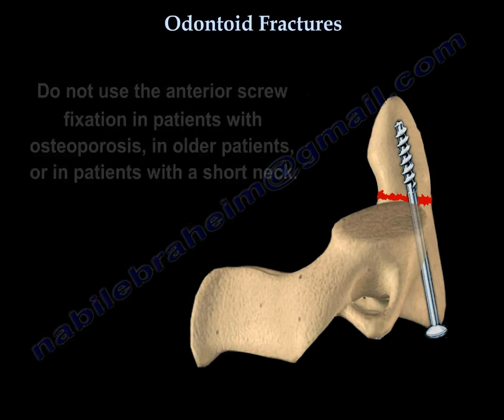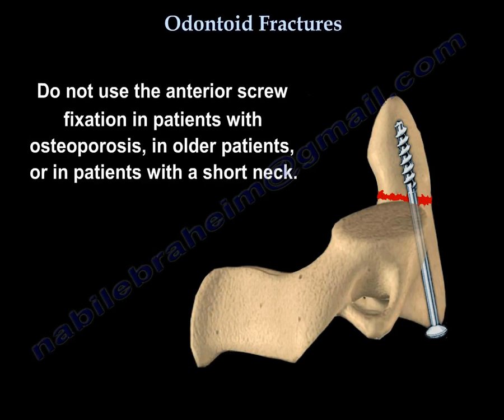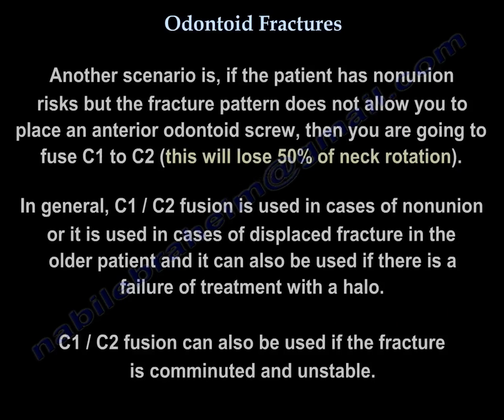Do not use the anterior odontoid screw in osteoporosis, in older patients, or in patients with a short neck. If the patient has non-union risks but the fracture pattern does not allow an anterior odontoid screw, then you're going to fuse C1 to C2, and you're going to lose 50% of the rotation.